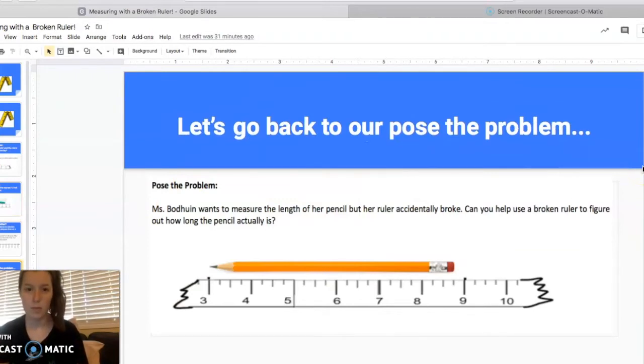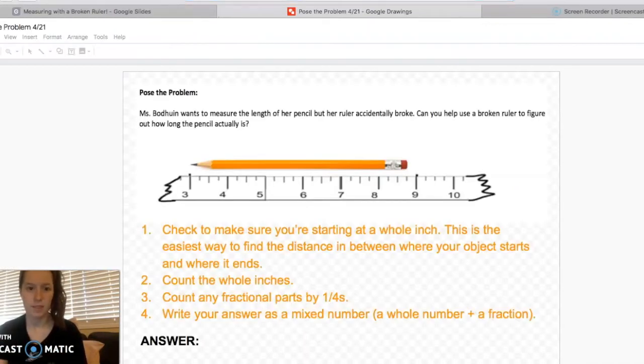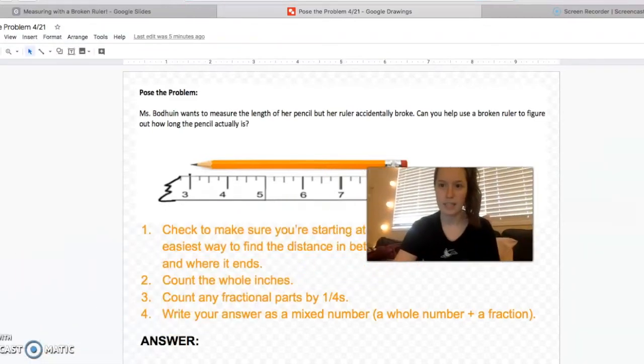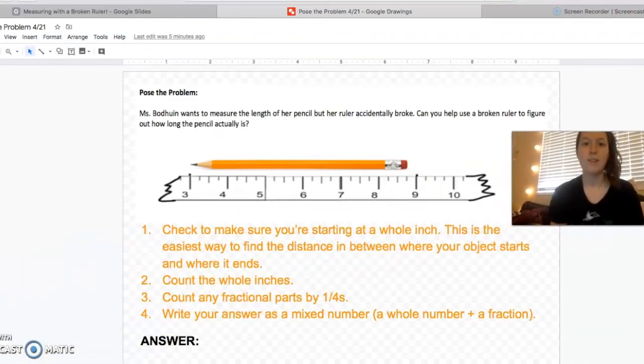So let's go back to our pose the problem. We can't forget about Mrs. Beaudoin. She needs our help. I'm going to take you into my drawing tool here and I will move myself into the corner so that it's a little bit easier for you to see. So I've created some steps here to help us solve problems when we're measuring with a broken ruler. The first is checking to make sure we're starting at a whole inch. Whole inch. What do I mean when I say that? Think in your brain.